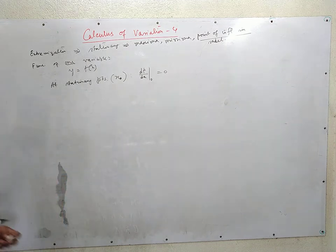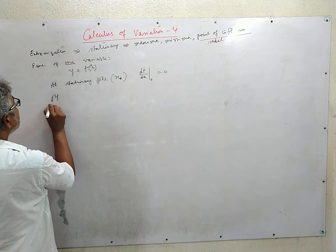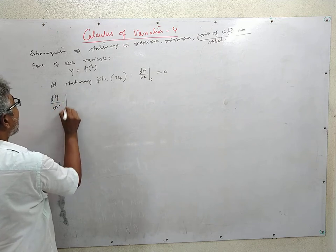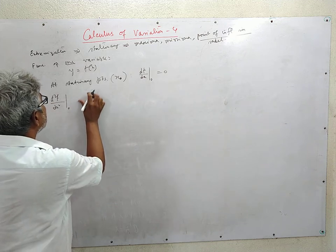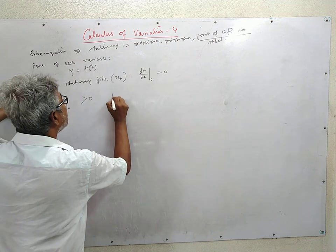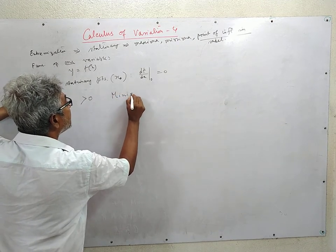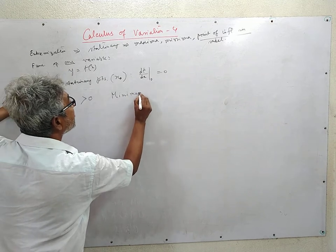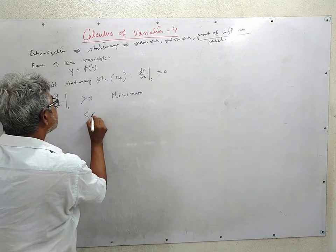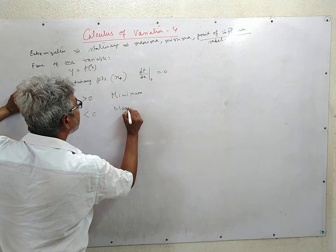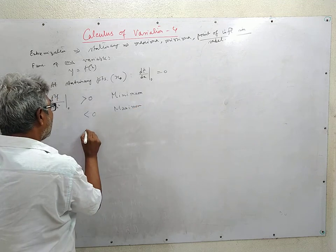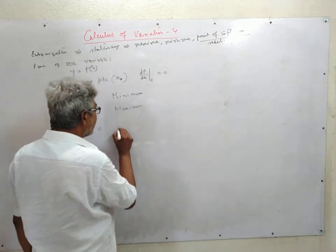Furthermore, if we want to know the nature of the stationary points, we calculate d²f/dx² at x₀. If this is greater than zero, x₀ is a point of minimum. If it is less than zero, x₀ is a point of maximum. And if it is zero, then it is a point of inflection.